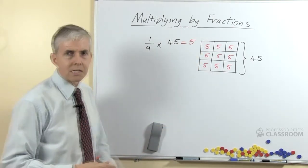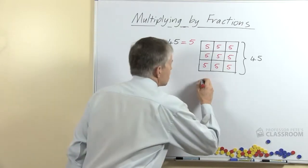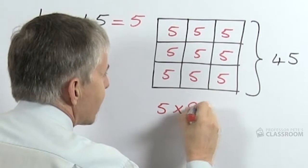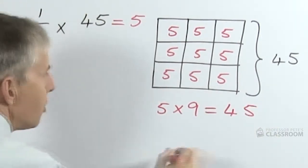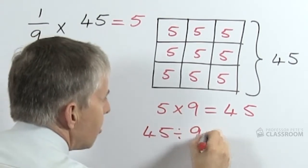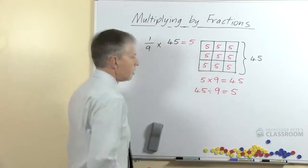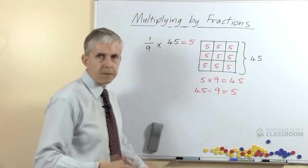So if we have 1/9 of 45, it's the same as dividing by 9, and there's our answer. So we can relate this back to the number facts, the times tables the students have done: 5 times 9 is 45. We can turn all of that around and look at the related number fact: 45 divided by 9 is 5, 1/9 of 45 is 5. Great.